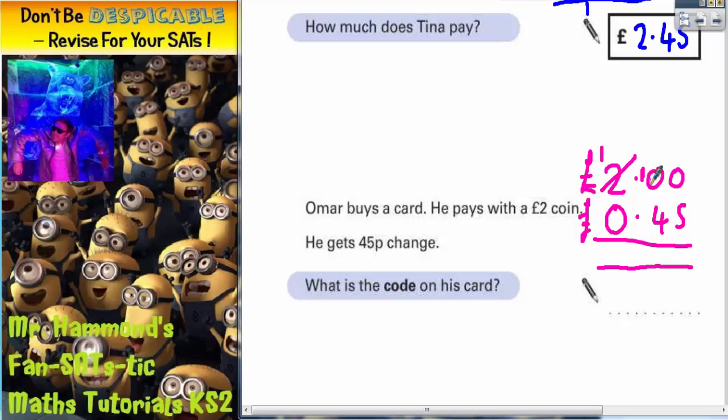So now we can borrow from this 10 because we need to get something over in this column. So borrow one from the 10 to make 9. And the one that we've borrowed makes that one 10. 10 take away 5 is 5, 9 take away 4 is also 5, and 1 take away 0 is still 1. Don't forget your point and don't forget your pound sign. So this means he must have paid £1.55.